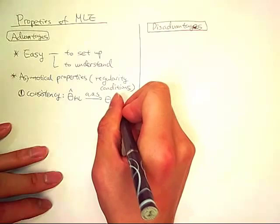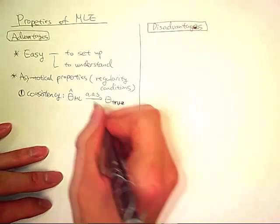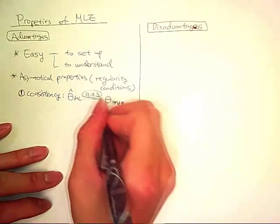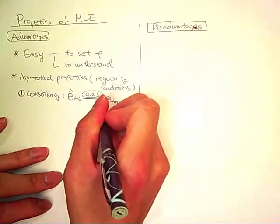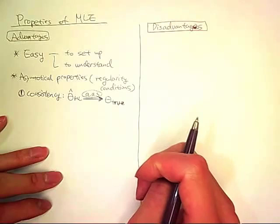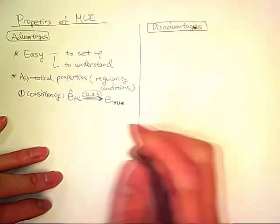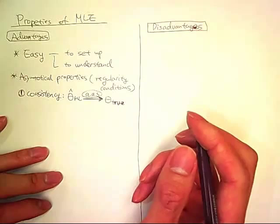So asymptotically almost surely is fairly formal statistical notation. More casually speaking, this means that MLE will give you the value of a parameter estimation, the true value of the true parameters, with high probability.